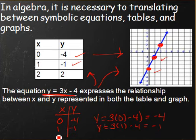Finally, when x is two, y is equal to three times two, which is six, subtract four, which is a positive two.